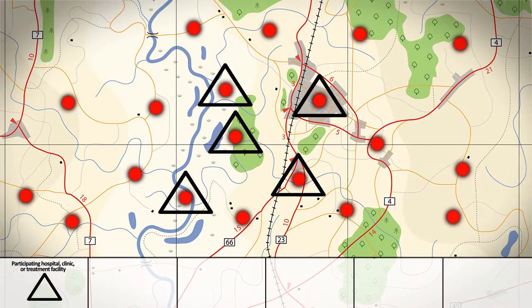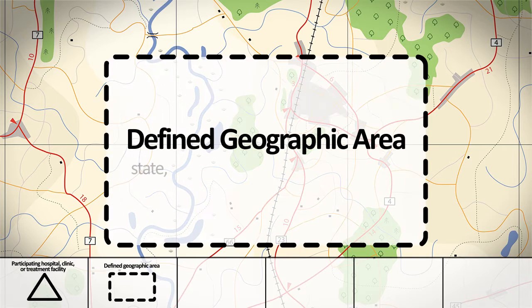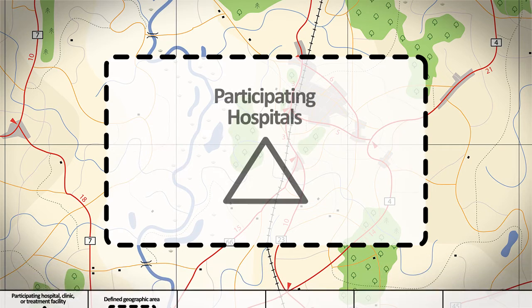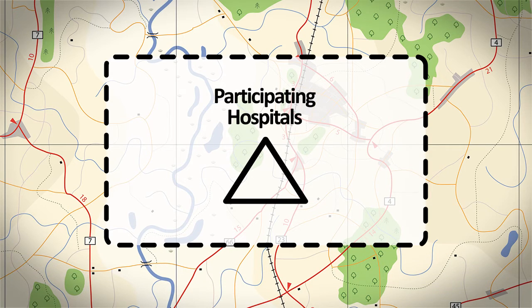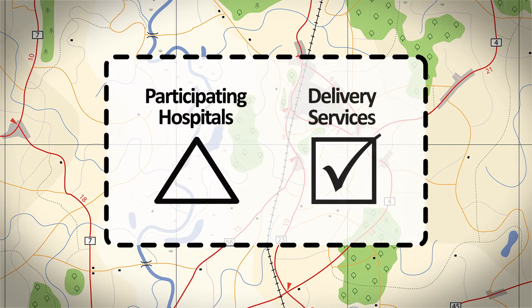Hospital-based surveillance programs collect data on birth defects from selected hospitals in a defined geographic area, such as a state, province, district, region, or county. A hospital can participate in surveillance if it is a facility with delivery services.